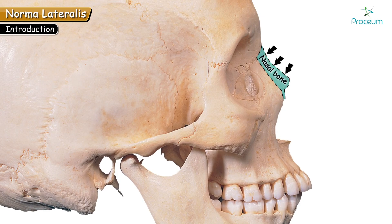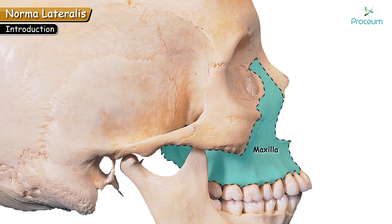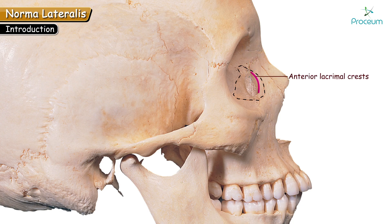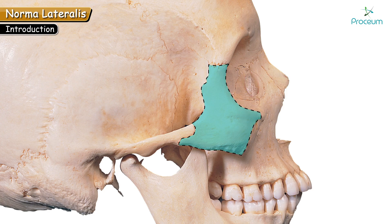Let's see the other bones. The nasal bone is present anteriorly. Next to the nasal is the maxilla, also known as the upper jaw, which articulates with the nasal, frontal, and lacrimal bones. Next is the lacrimal bone. On the medial side of the orbit, the depression present is the lacrimal fossa, which is formed by the lacrimal bone and is bounded by the anterior and posterior lacrimal crests. The cheek bone present on the lateral side is the zygomatic bone.